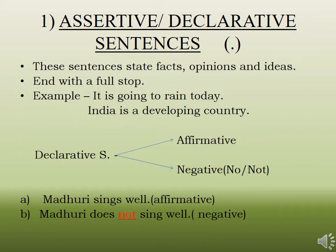We have now discussed all four kinds of sentences. Let's start with the very first: assertive or declarative sentences. These are sentences which state facts, opinions, or ideas, and they always end with a full stop. For example, 'It is going to rain today' — that is an opinion based on observing the weather. 'India is a developing country' — that is a fact known to everyone.